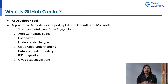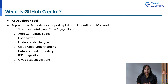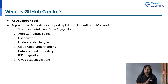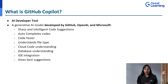GitHub Copilot is an AI developer tool — an artificial intelligence-based developer tool. Programmers, software coders, and developers are going to use GitHub Copilot to write code and create software. It is based on a generative AI model, and it was developed by GitHub, OpenAI, and Microsoft. Initially it was founded by GitHub and OpenAI, but as Microsoft is one of the investors, their name is also associated.